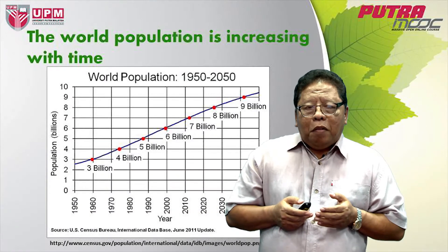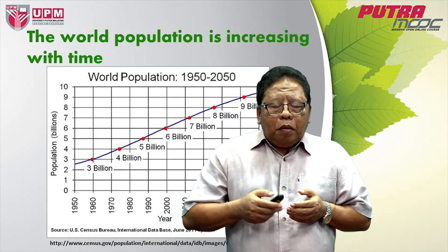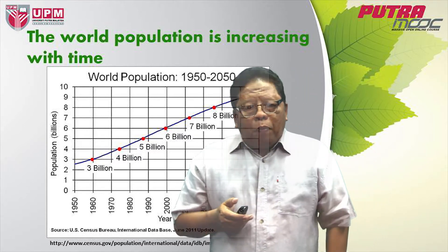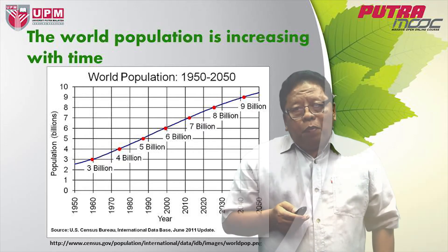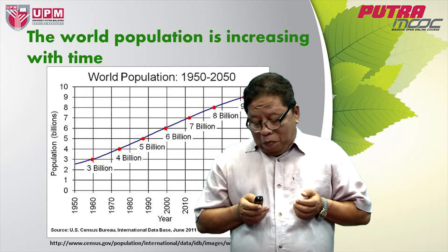This graph shows the progressive increase of the global population, which now stands at 7 billion. By 2050, it will reach close to 10 billion, which means there is a need for more supply of food from agriculture.